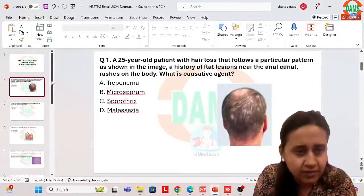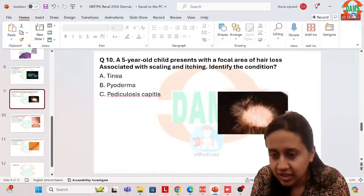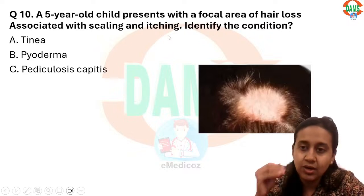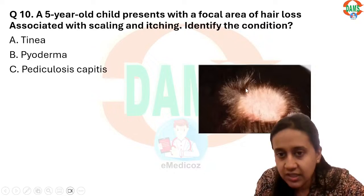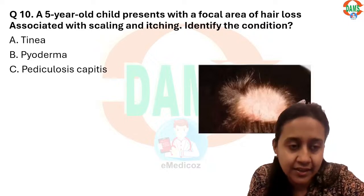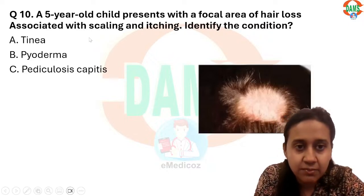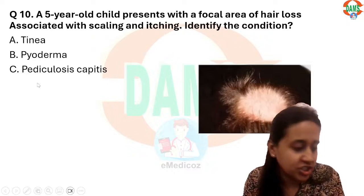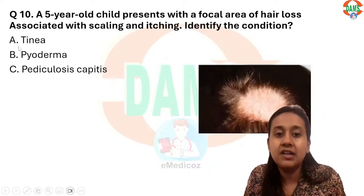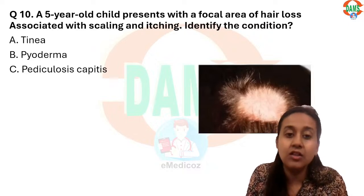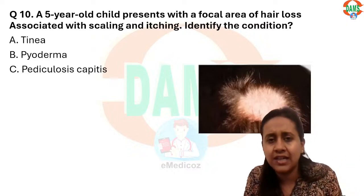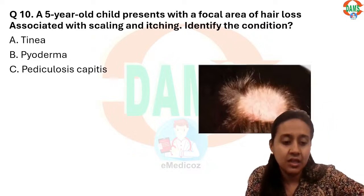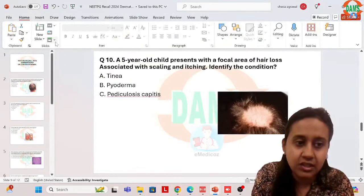There is one more question from the hair topic — I think this was given in the evening session. A five-year-old child presented with focal areas of hair loss, associated scaling and itching. Here you can see patchy hair loss. Whenever there is patchy hair loss, the diagnosis can be alopecia areata or fungal infection. But the very important point here is scaling and itching — you will never see scaling and itching in alopecia areata. This answer becomes tinea capitis, the non-scarring fungal infection. The endothrix or ectothrix varieties of tinea capitis present with this type of patchy hair loss.